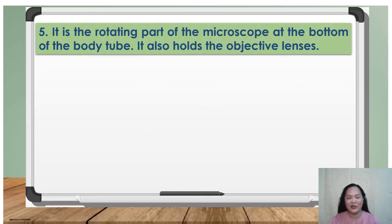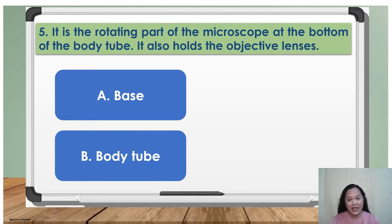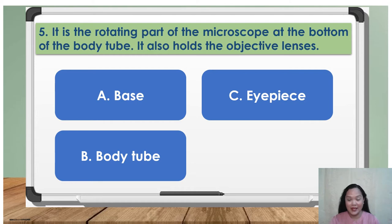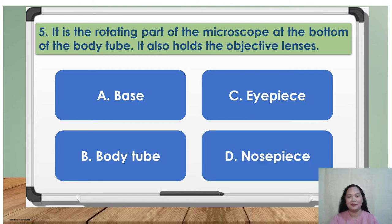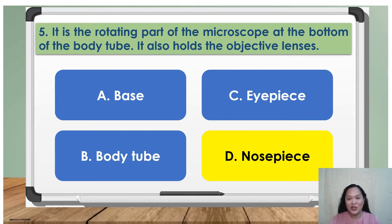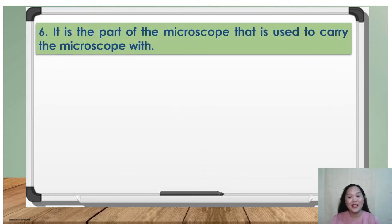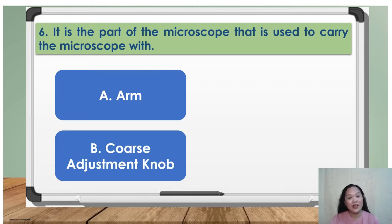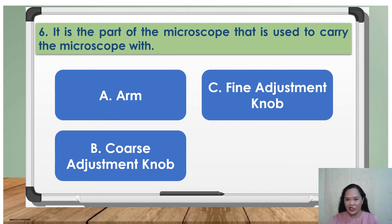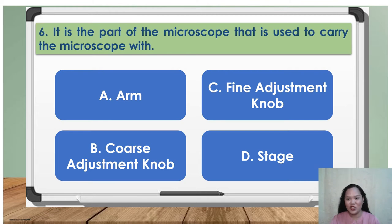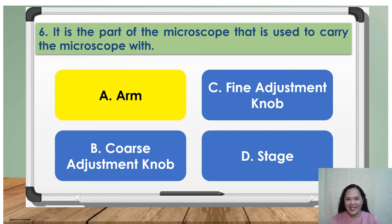Number five: it is the rotating part of the microscope at the bottom of the body tube that holds the objective lenses. A. Base, B. Body tube, C. Eye piece, D. Nose piece. Number six: it is the part of the microscope used to carry the microscope with. A. Arm, B. Coarse adjustment knob, C. Fine adjustment knob, D. Stage. The answer is A, Arm.